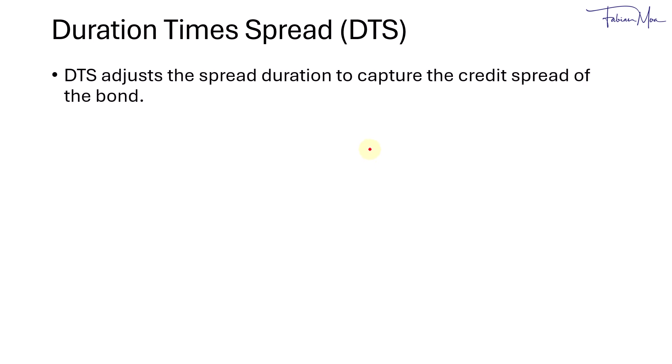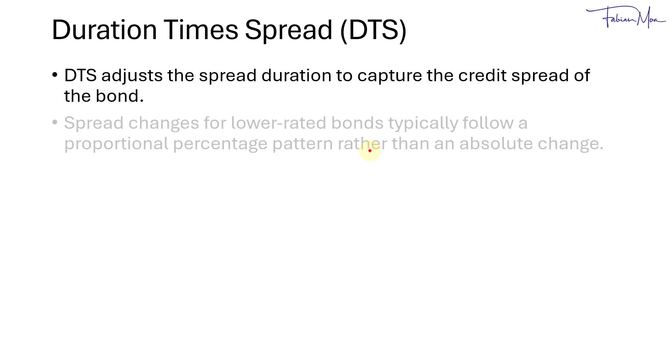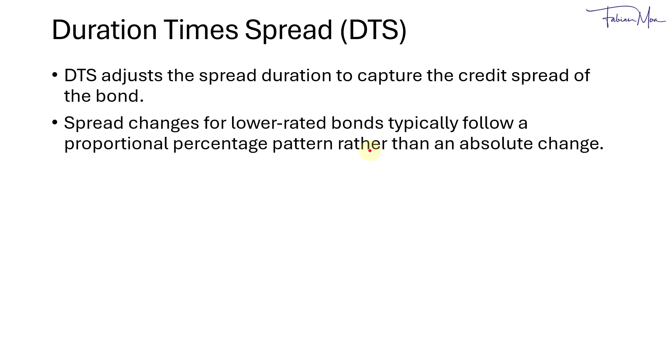DTS, or duration times spread, is a measure that adjusts the spread duration to account for the bond's credit spread. This allows us to better capture credit risk in fixed income instruments. For lower-rated bonds, spread changes tend to follow a proportional percentage pattern rather than moving in absolute terms. Mathematically, DTS is approximately equal to the spread duration multiplied by the spread itself.